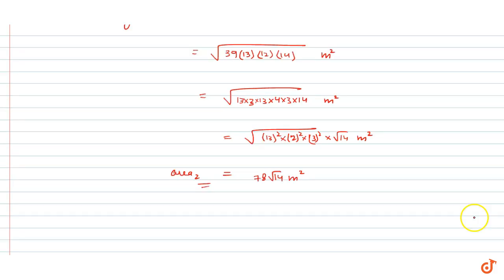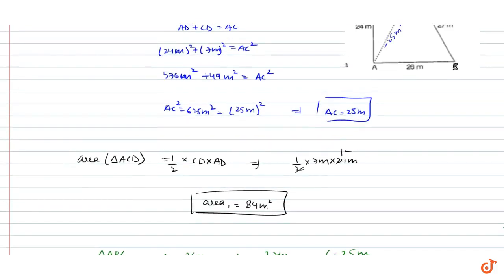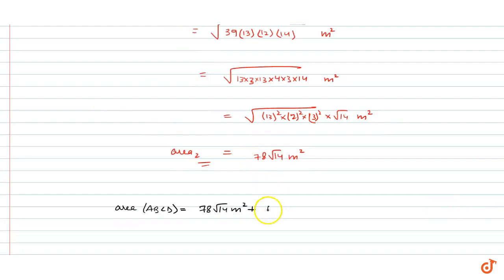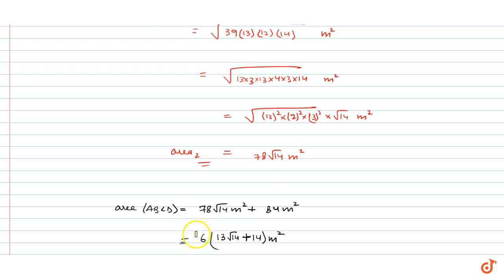So area 2 is 78 root 14 m squared. The total area of quadrilateral ABCD is the sum of both triangles: 78 root 14 plus 84 m squared. This is the required area of the given quadrilateral.